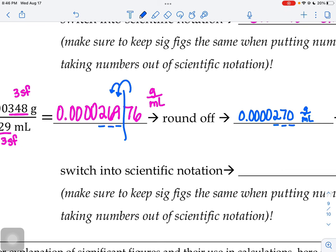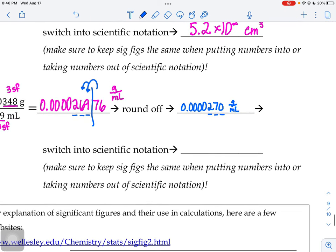If we wanted to take that answer and put it into scientific notation, we want to keep sig figs the same. So I'm going to keep the two, the seven, and the zero. And then I would have times 10 to the negative fifth small number and then our unit.